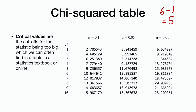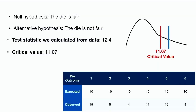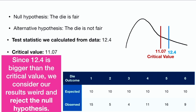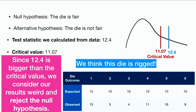We can find critical values — the cutoff values for the statistic being too big — in a table in a statistics textbook or online. If the statistic is bigger than the critical value, we reject the null hypothesis. With 5 degrees of freedom and a common alpha of 0.05, our critical value is 11.07. We observed 12.41, which is bigger than 11.07 — so we consider our results weird and reject the null hypothesis. We conclude that this die is not fair. We think the die is rigged.